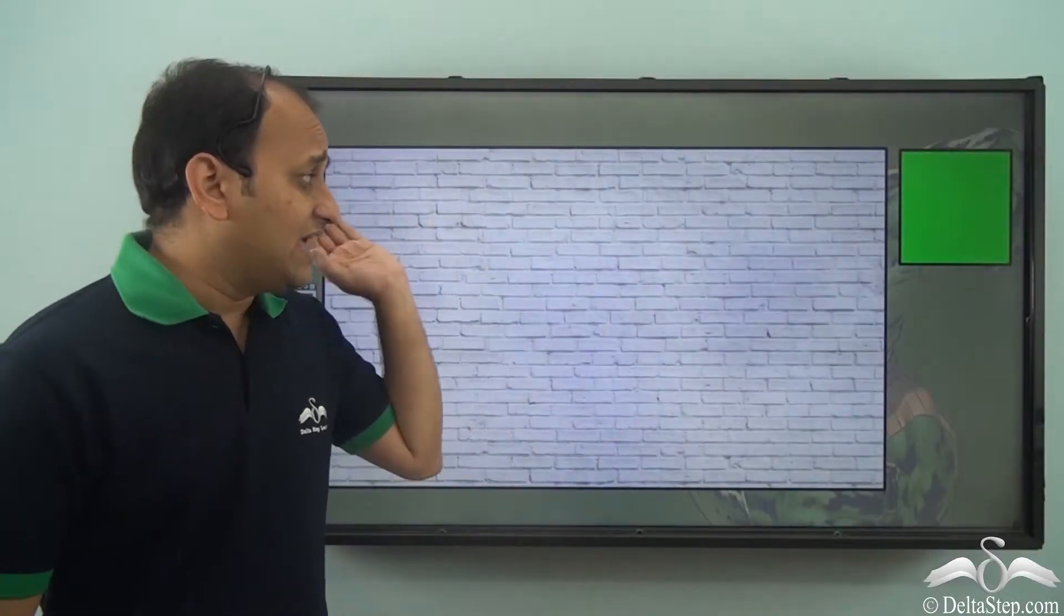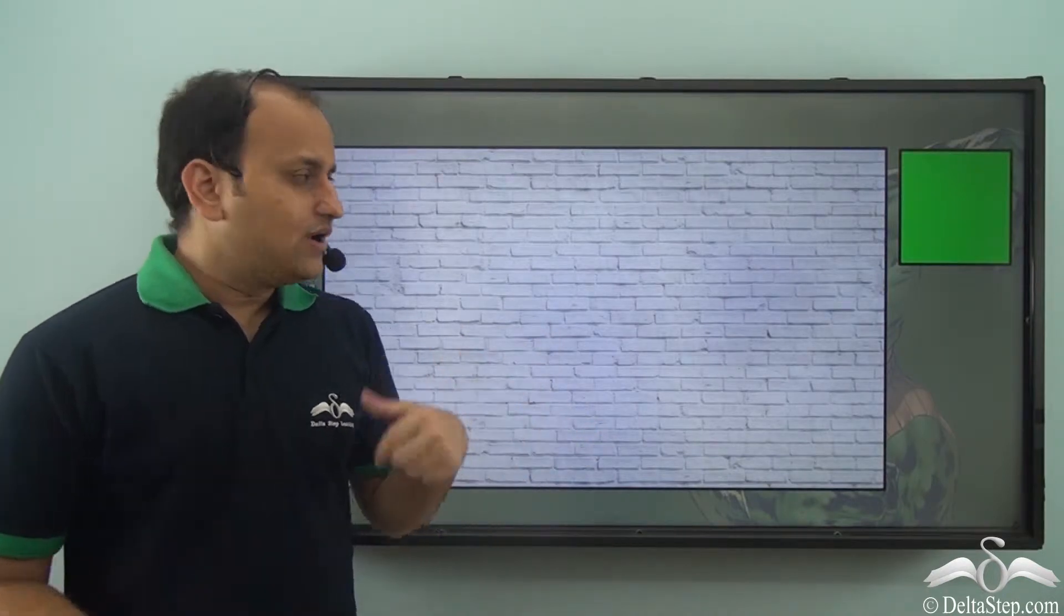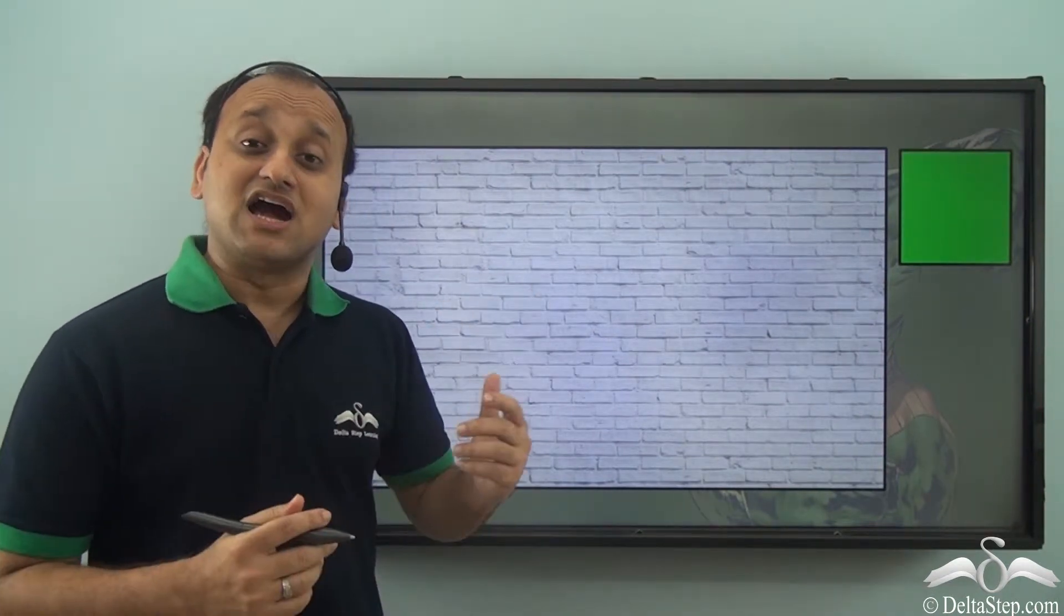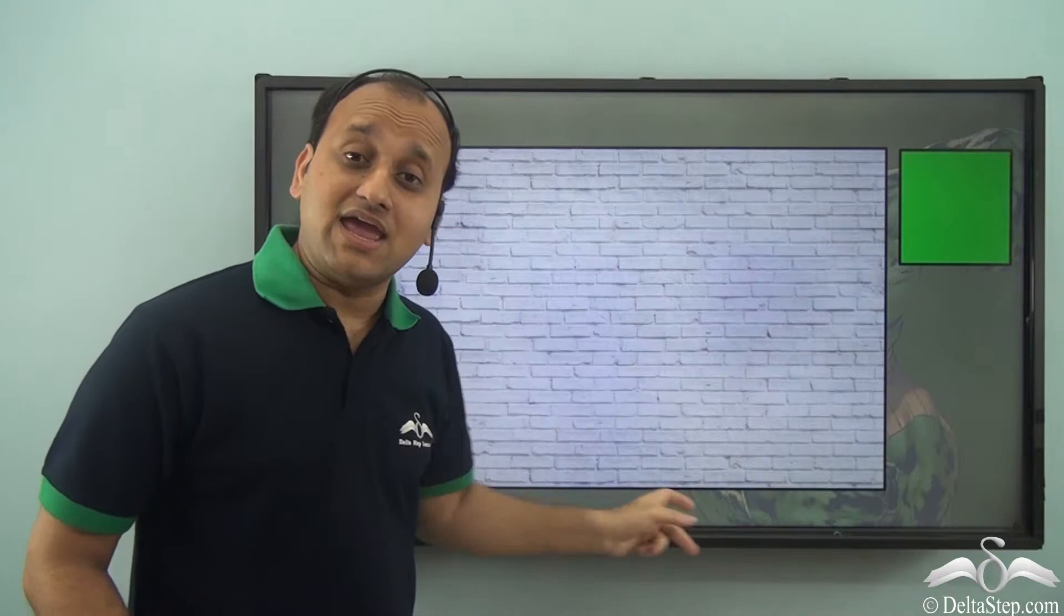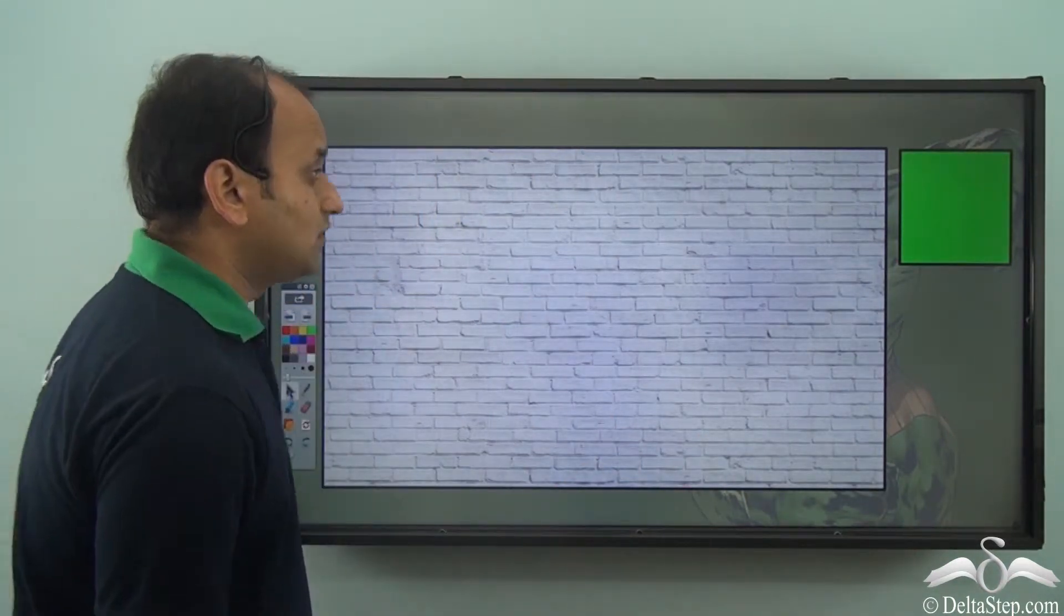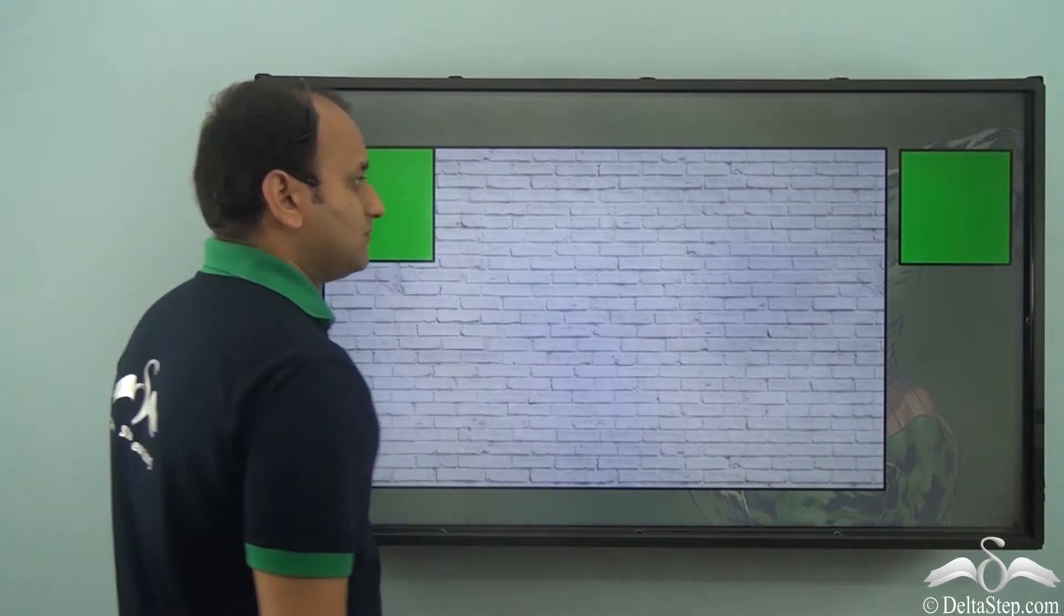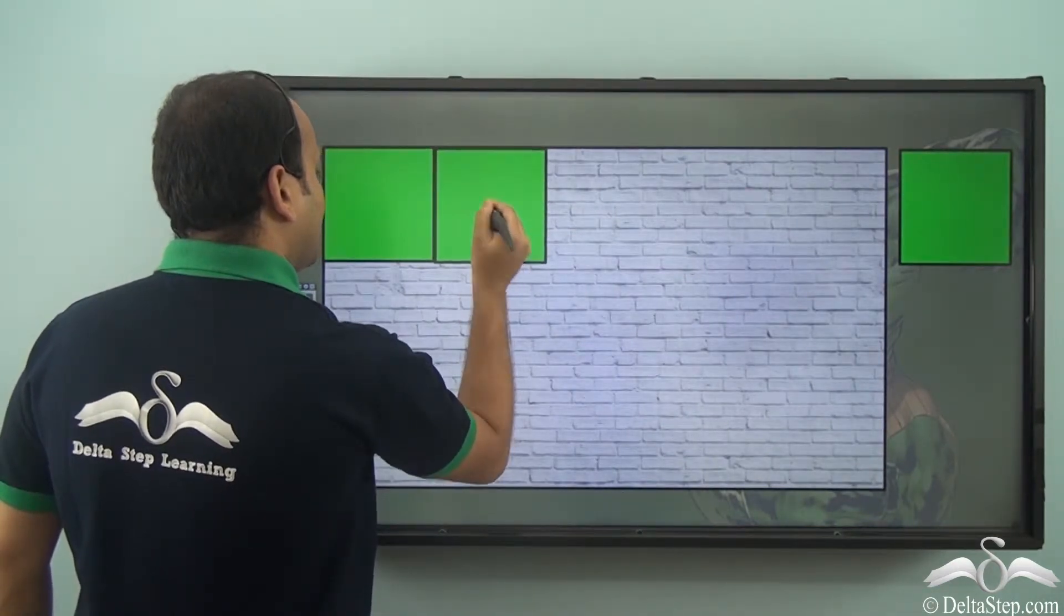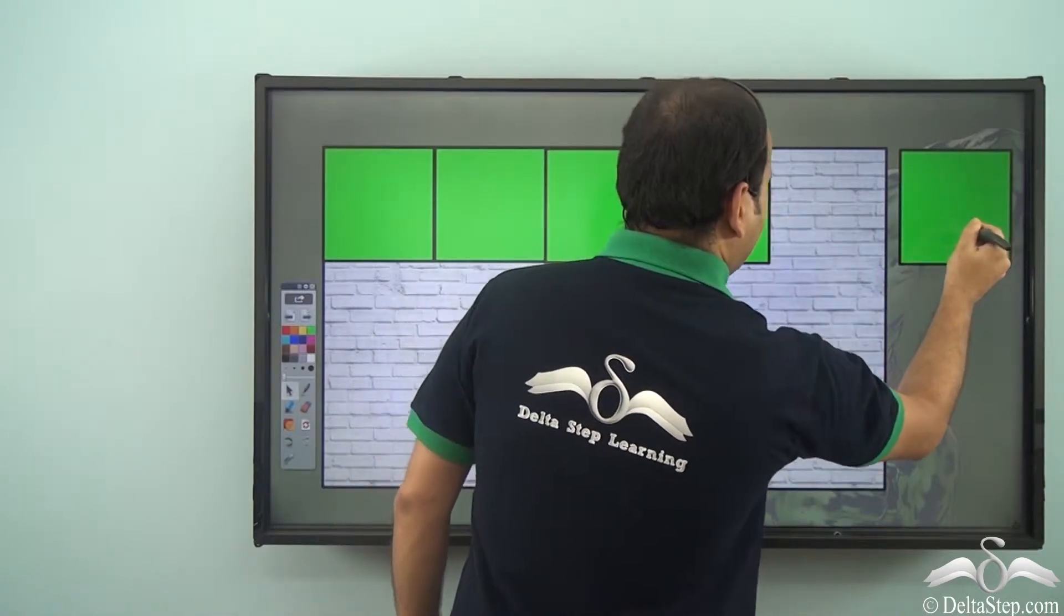Now to find the area of this wall, Sam thought of a technique. He said I have a square tile, so I will measure how many tiles can completely cover this particular area and then tell the shopkeeper he needs to paint an area covered by those many tiles. So he got a tile and started measuring. He took a tile and placed it on the wall, then took another one and placed it here. Similarly he took more tiles and started covering the area.